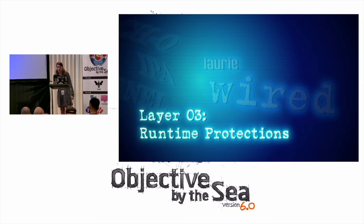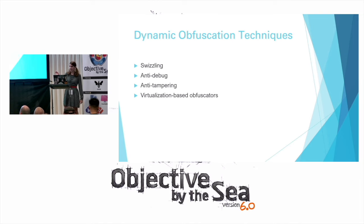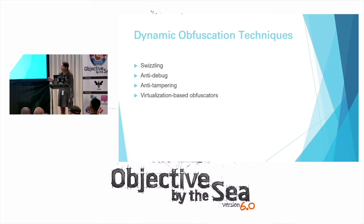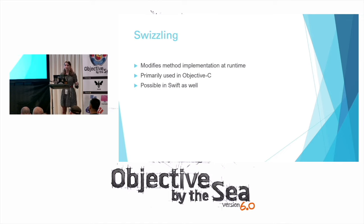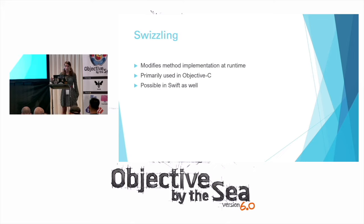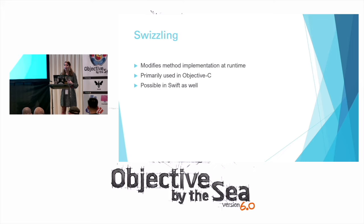Now let's move on to some different runtime protections. We're going to talk about swizzling — a very Objective-C specific technique — as well as anti-debug, anti-tampering, and virtual machine based obfuscation. Swizzling is part of the Objective-C runtime and is possible because Objective-C is able to perform introspection: it can look at what classes, methods, and variables are defined inside of itself, and dynamically pull the implementation of certain methods or variables, as well as potentially exchange implementations all while the application is running. This is primarily used in Objective-C but is possible in Swift as well, as long as Objective-C types are used.